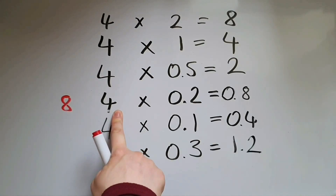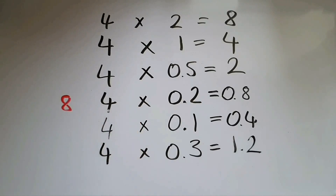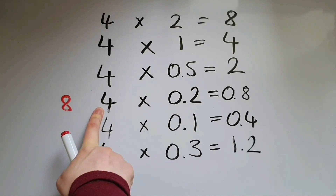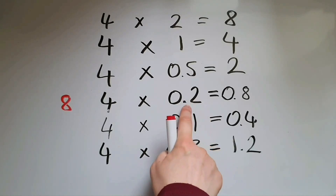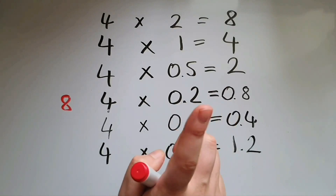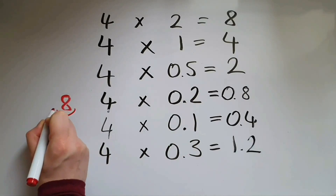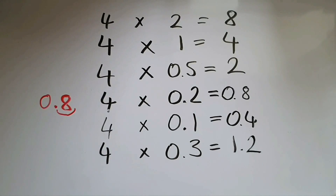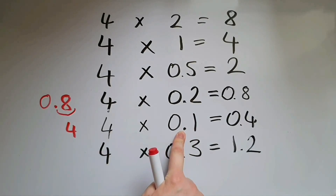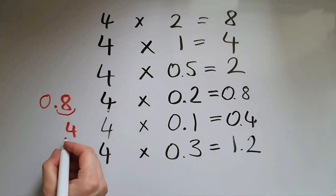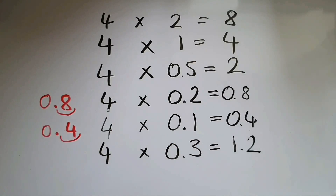Now, how many decimal places does this answer have — in other words, how many digits after the decimal point? This one doesn't have a decimal point at all, so there are none. But this one has one decimal place, so one digit after the decimal point — one in total. So I'm going to give the answer one decimal place: 0.8. Same thing here: 4 times 1 gives me 4, no decimal places here, one decimal place there, so 1 in total, giving 0.4, and that matches the answer.